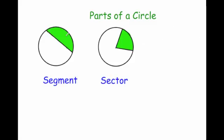A segment — this green region is called a segment. It's the region which is bound by a chord and an arc. So this green section here is a segment.